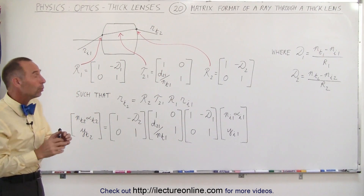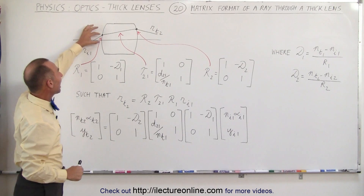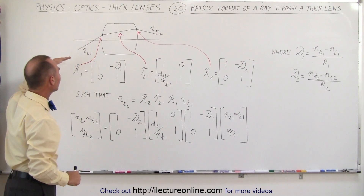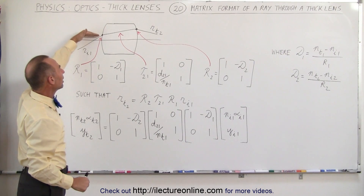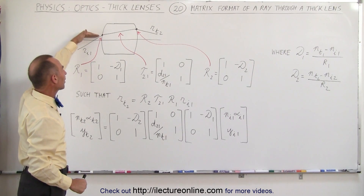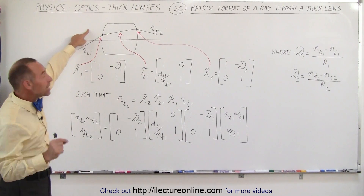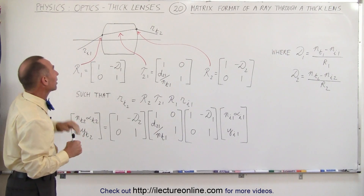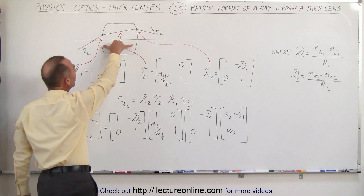What we want to know is: if we know the height of the incoming ray above the optical axis, and we know the angle relative to the horizontal line, and we know the index of refraction of the medium that it's coming from at the front side of the lens.